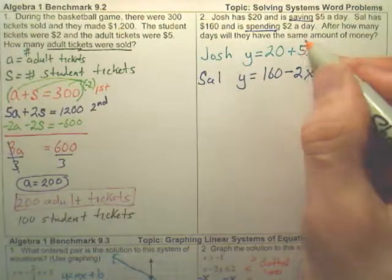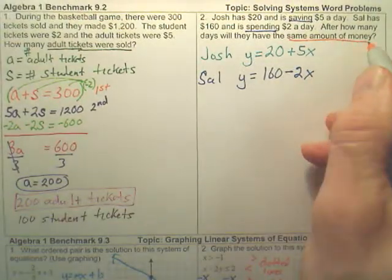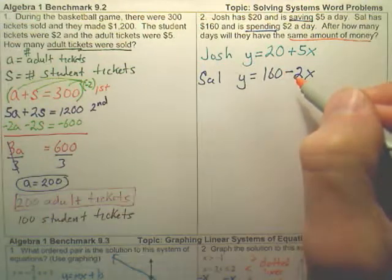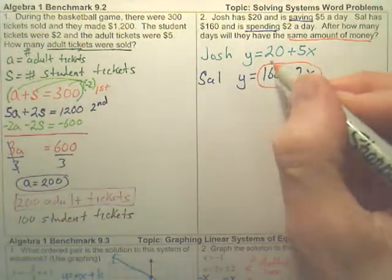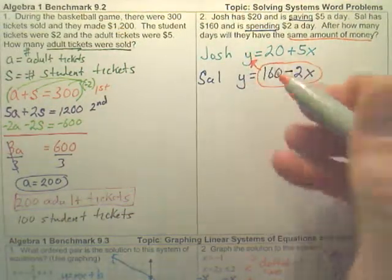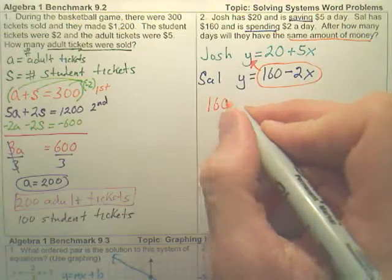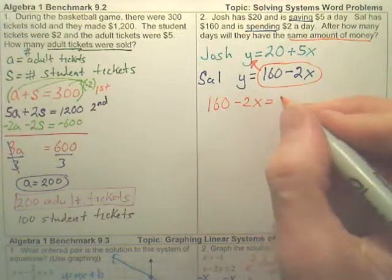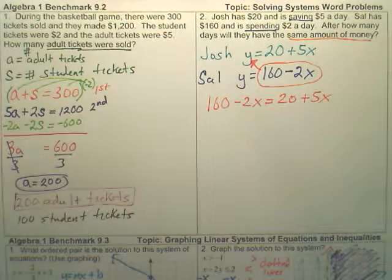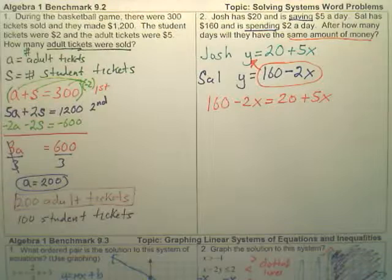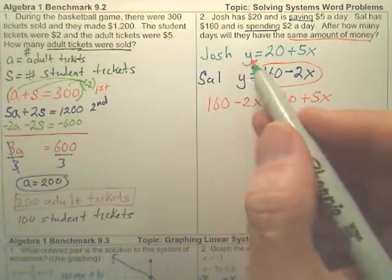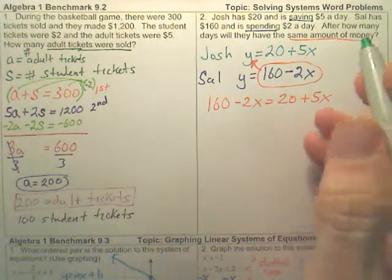So I want to find out when do they have the same amount of money. So I want to know when these two are equal. I want to know when they're equal. To know when they're equal, could I simply take this and stick it right there for Y? Since Y equals this, can I take it right there? And make an equation, 160 minus 2X equals 20 plus 5X. And can I solve that? Yeah. Because when I want to know when they're the same, I basically want to put this in here and solve when they are equal to each other.